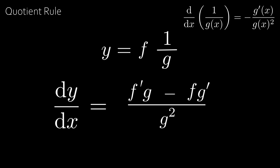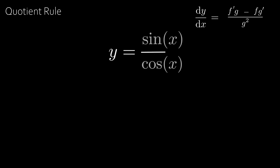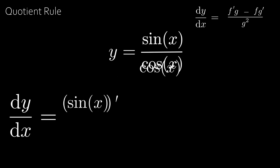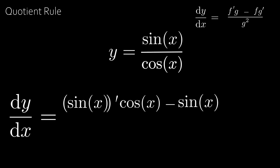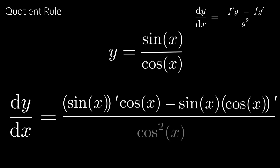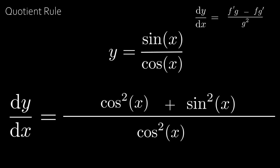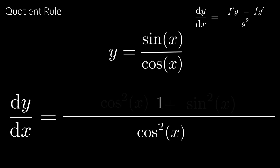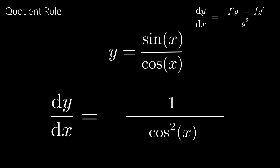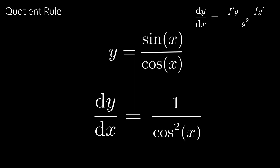One of the most famous applications of the quotient rule is finding the derivative of tan(x). Writing tan(x) = sin(x)/cos(x) and applying the quotient rule gives dy/dx = (cos(x)·cos(x) − sin(x)·(−sin(x))) / cos²(x). This simplifies to (cos²x + sin²x) / cos²x. Using the identity cos²x + sin²x = 1, we get dy/dx = 1/cos²(x), also written as sec²(x).